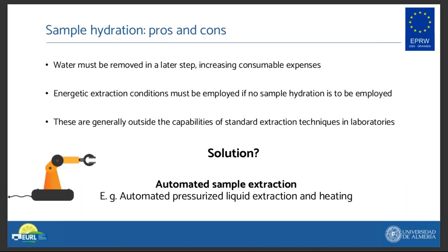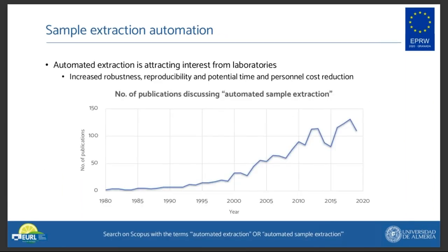However, for compounds that require a hydration step prior to their extraction, if water is to be avoided, then more energetic extraction conditions must be applied. These conditions are not normally within the standard extraction techniques available in laboratories, or if they are, they carry another kind of drawbacks of their own. What is a possible alternative then? The alternative is the automatic sample extraction using techniques such as pressurized liquid extraction and sample heating. The concept of automation is by no means a foreign concept by now.